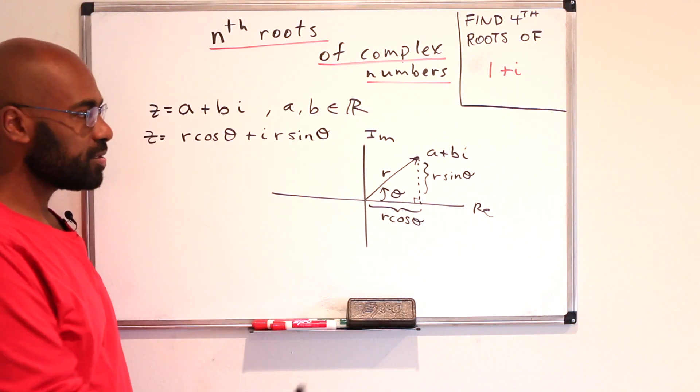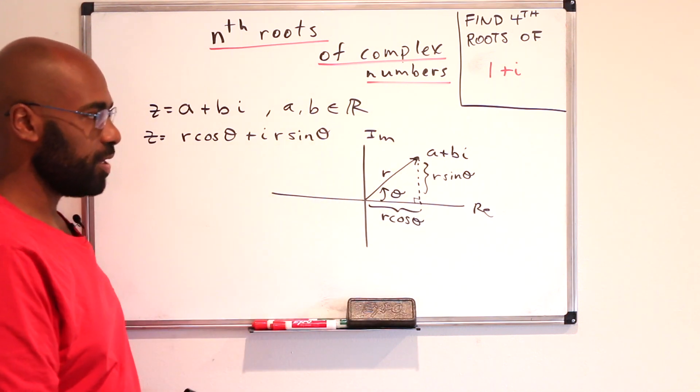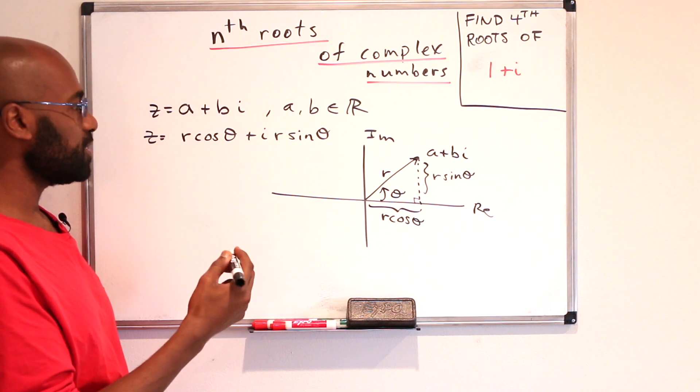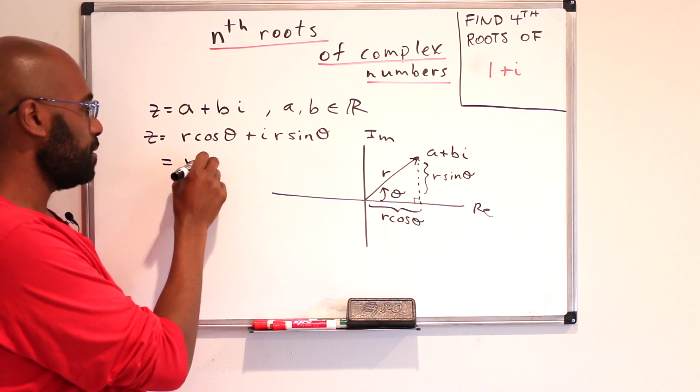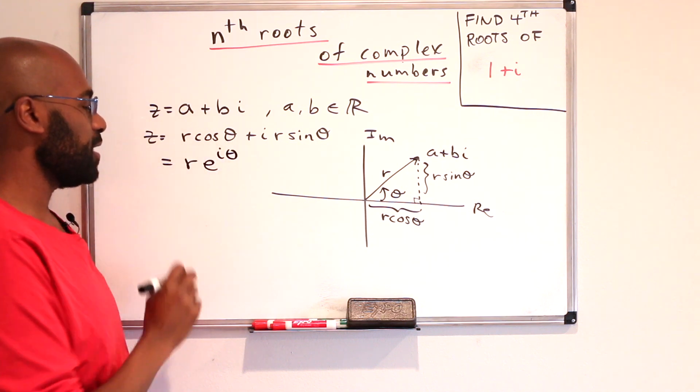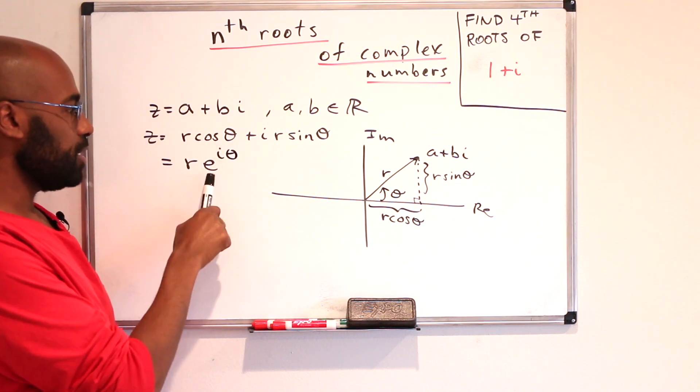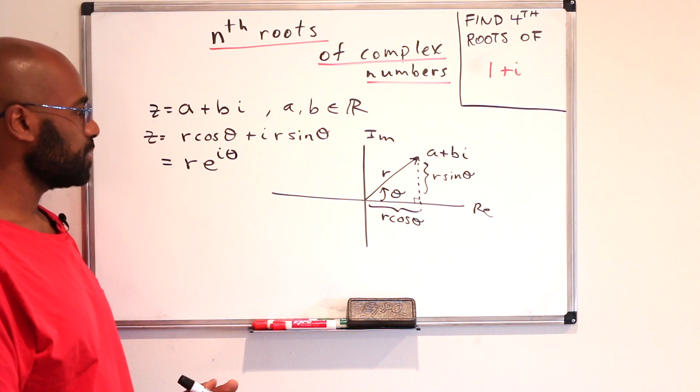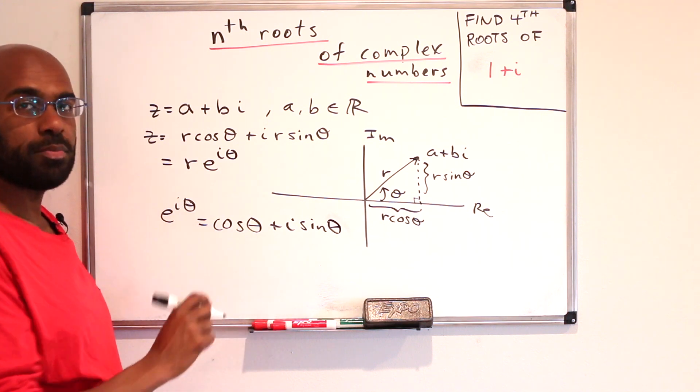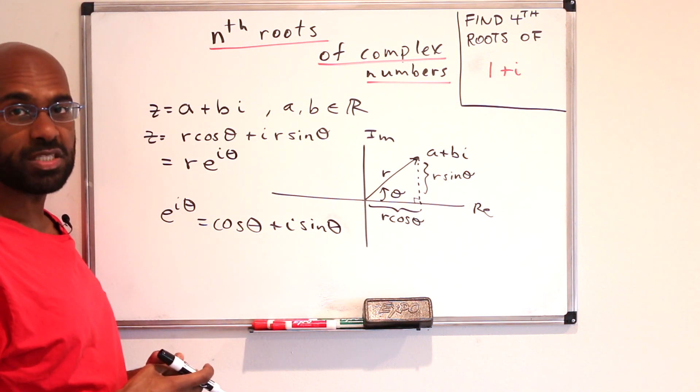And so we can write this complex number as r cosine theta plus i r sine theta. This is sometimes called the polar form of a complex number. And there's this nice representation of this as an exponential, writing as r e to the i theta. The equality of e to the i theta with cosine theta plus i sine theta is called Euler's formula. So we're going to exploit that in this video.